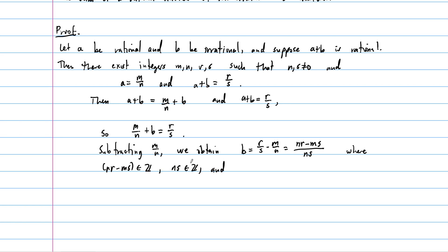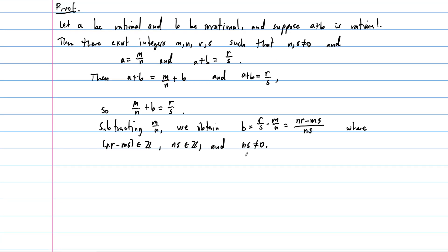And since neither N nor S is zero, then their product is not zero. What does that tell us? Well, therefore, B is a rational number. So then B is rational.